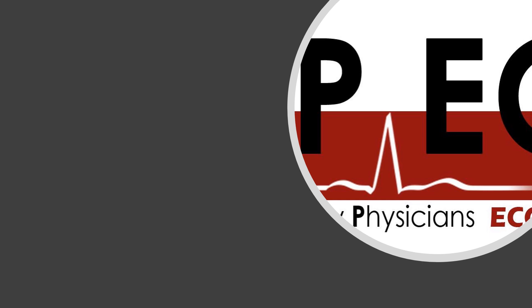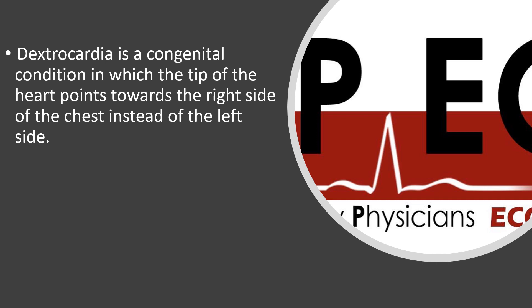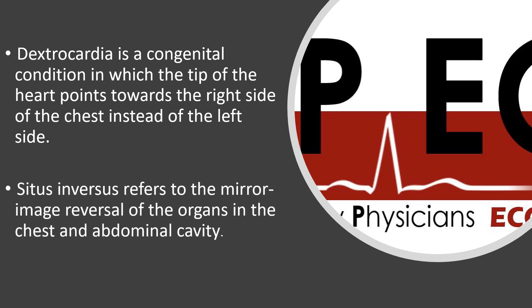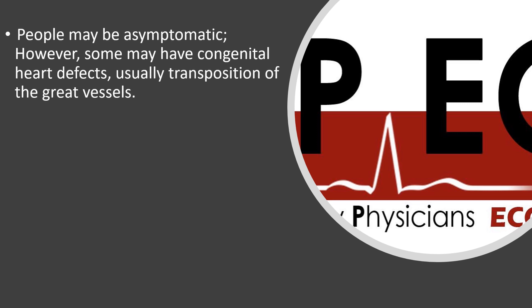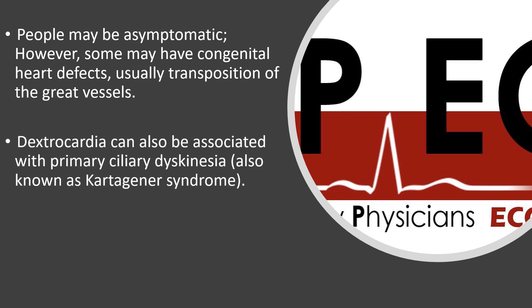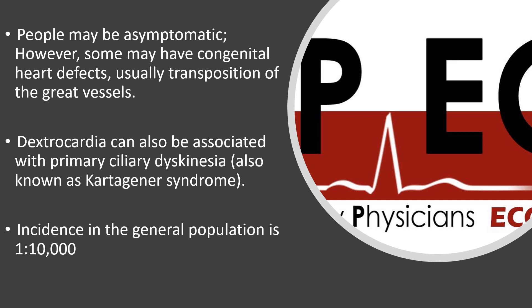So what is dextrocardia? Dextrocardia is a congenital condition in which the tip of the heart points toward the right side of the chest instead of the left. It can happen in isolation — just the heart going the wrong direction — or it can be part of situs inversus, where all the internal organs in the chest and abdomen are mirror-image reversed. People with this condition can be asymptomatic and it may be an incidental finding, but some have congenital heart defects, usually transposition of the great vessels. Dextrocardia can also be associated with primary ciliary dyskinesia in Kartagener syndrome. The incidence is about one in ten thousand.